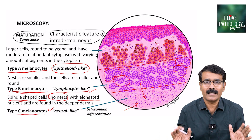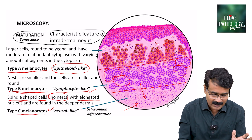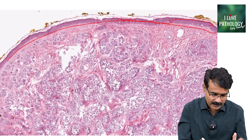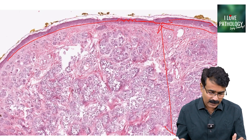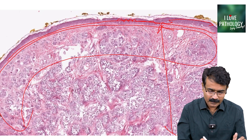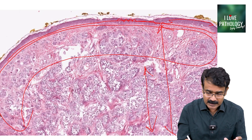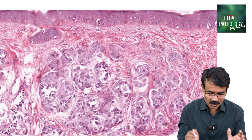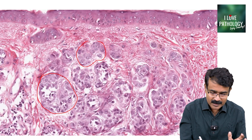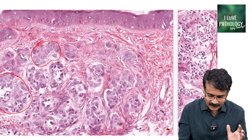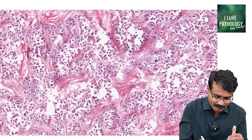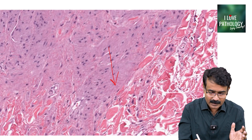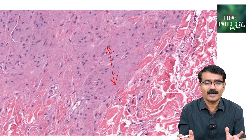Now let me show you how exactly intradermal nevus looks on a histopathological slide. This is your surface of skin with epidermis, and this part is the dermis. In the upper part of this tumour you find larger cells — type A melanocytes, nests of large polygonal cells. In the middle part you find much smaller, dot-like, lymphocyte-like type B melanocytes. And the deeper part has spindle-shaped, neural-like type C melanocytes.